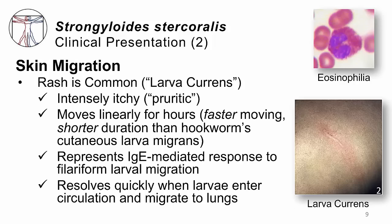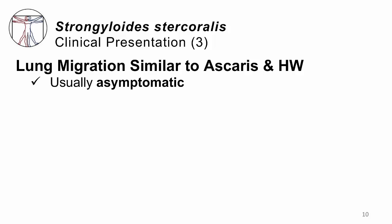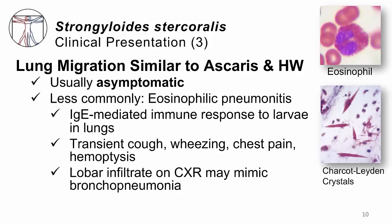Once those larvae reach the lungs, it's just like Ascaris and hookworm. Most people have no symptoms, but once in a while someone will truly have a cough, wheezing, chest pain, or even coughing up of blood. That's because there is an IgE-mediated immune response that recruits eosinophils into the lungs. The eosinophilic granules released by eosinophils cause inflammation. You might see Charcot-Leyden crystals in the sputum, or if you snap a chest x-ray at the right time, you might even be fooled into thinking they have bronchopneumonia. We call this Löffler's syndrome.